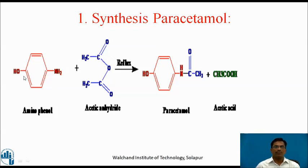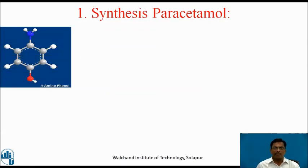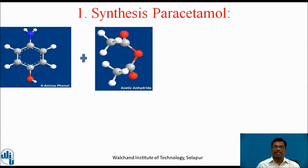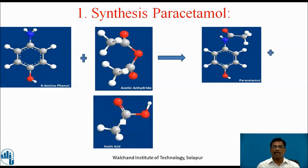4-aminophenol, when reacted or refluxed with acetic anhydride, gives us the paracetamol molecule, but along with this, acetic acid molecule is also formed. This can be explained with a graphical presentation: 4-aminophenol refluxed with acetic anhydride gives us paracetamol and acetic acid.